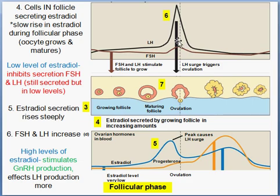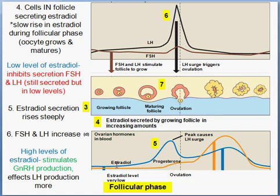After ovulation, low levels of estradiol inhibit secretion of FSH, which continues but at low levels. Estradiol — part of the estrogen family of hormones, along with estriol — is produced during the ovarian cycle. After its peak, this rise in estradiol causes a positive feedback surge in LH, triggering ovulation. Then LH drops and progesterone begins to rise.